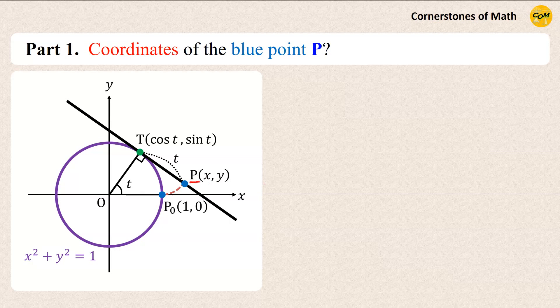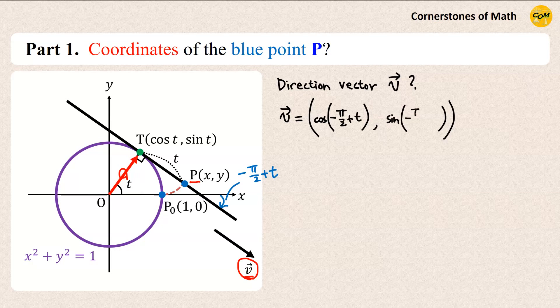Next, in order to find the position of P, first let us find the direction vector of the line TP, which is this vector V. Here, notice that this vector V is essentially this vector OT rotated clockwise by angle π over 2. This means that line TP and correspondingly vector V make an angle minus π over 2 plus T with the positive x direction. Therefore, we can pick our direction vector V as cosine minus π over 2 plus T comma sine minus π over 2 plus T, which gives sine T comma minus cosine T.